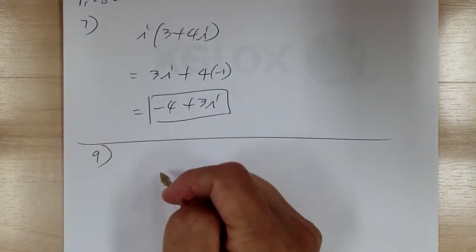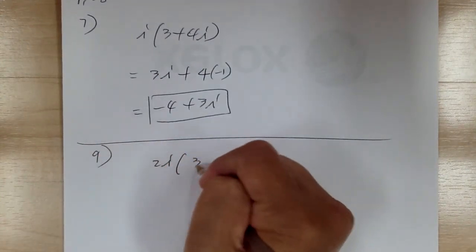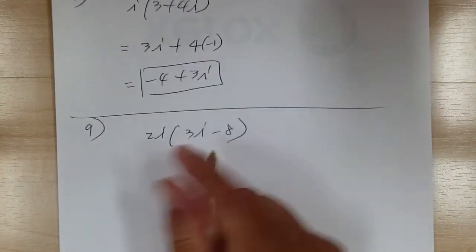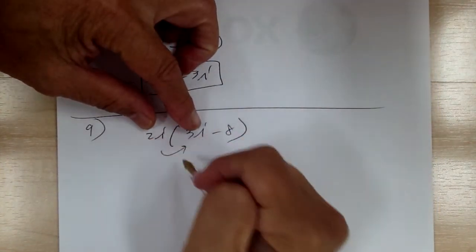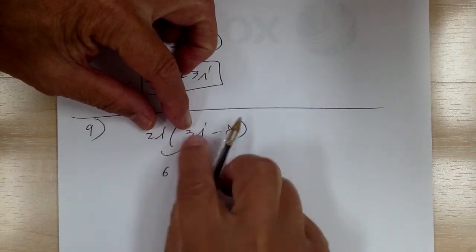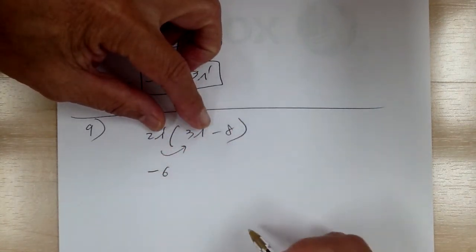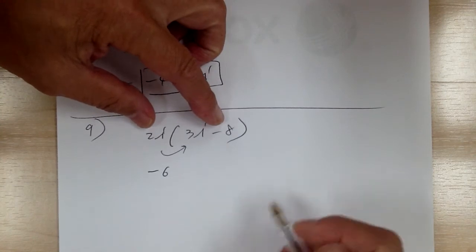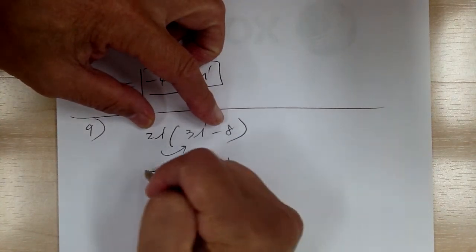Number 9: you have 2i times (3i minus 8). Distribute: 2 times 3i is 6i, and 6i times i is negative 1, so that part becomes negative 6. When you multiply the second part, you get negative 16i.